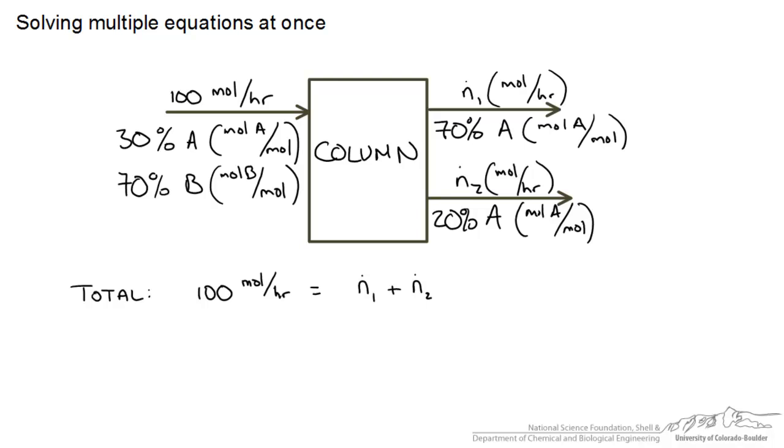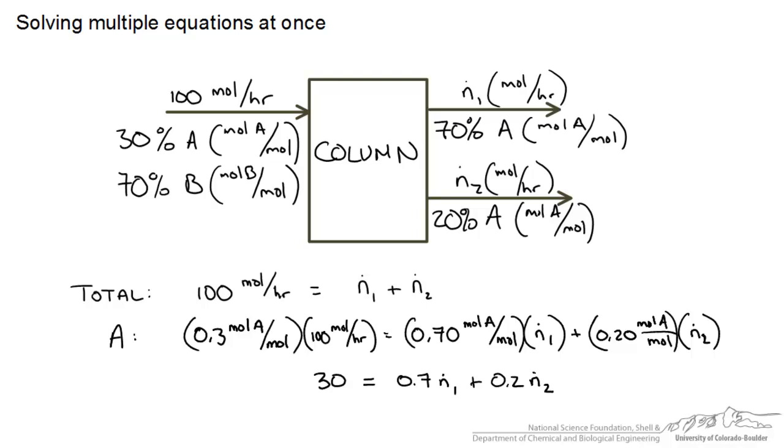Another balance we could do since we have two unknowns in one equation is on either species A or B. So let me write that for A. So I have simplified to show you what the equation would look like where we have 30 equals 0.7 times n1 plus 0.2 times n2.